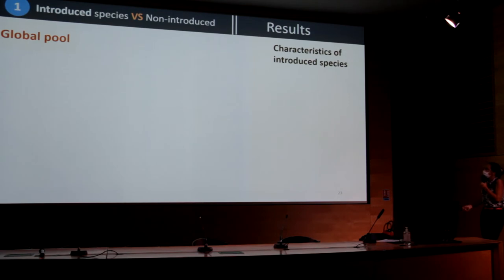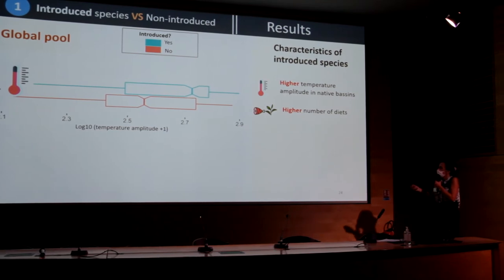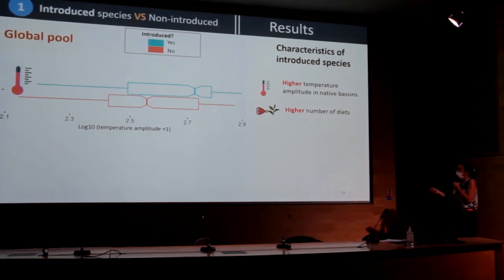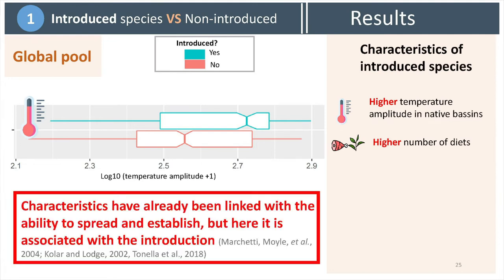Concerning the global pool, what we can see is that introduced species have a higher temperature amplitude in native basins than non-introduced species, and also a higher number of introduction pathways. These two characteristics have already been highlighted in the literature at the local scale in relation to spread and establishment, but here we link them with the introduction step at the global scale.